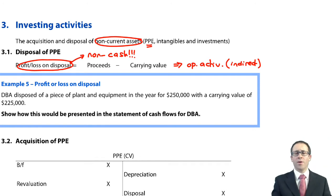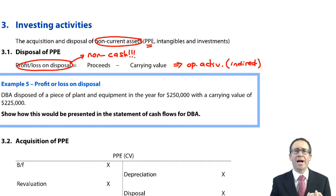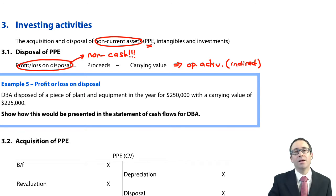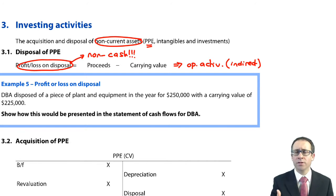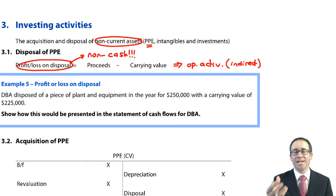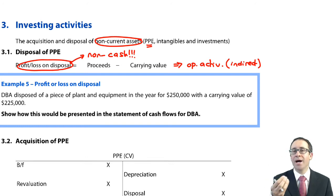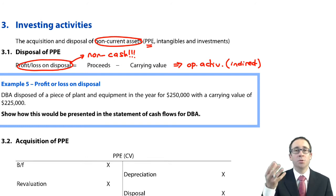If you have a loss on disposal, that's a non-cash expense that will need to be added back. If you have a profit on disposal, that's non-cash income which has pushed up your profits but hasn't increased your cash, so you will need to deduct it.